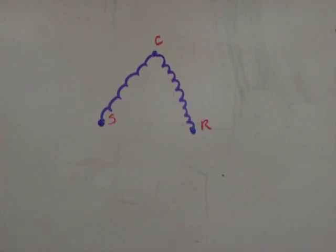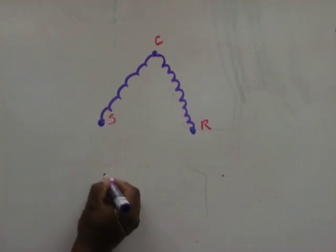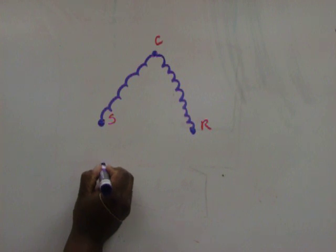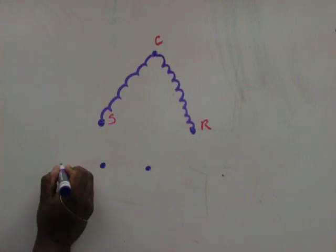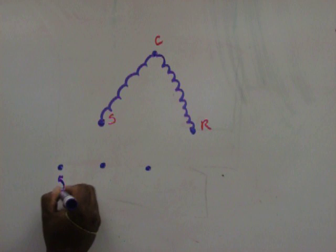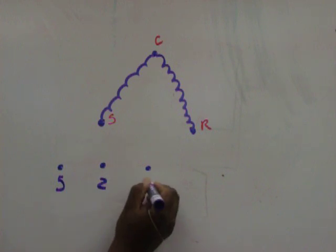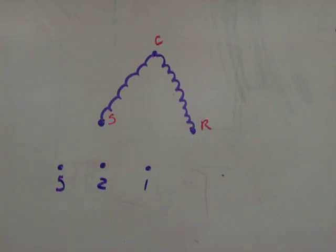Now, with the potential relay, I'm going to draw one. We need to know some connections on there. There are three connections we need to familiarize ourselves with. Point five, point two, and point one. Five, two, and one.